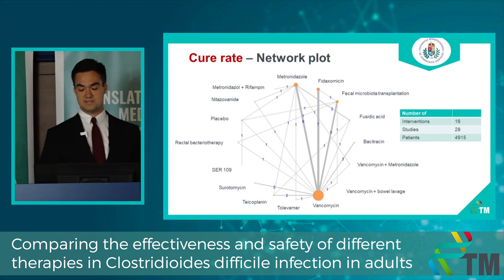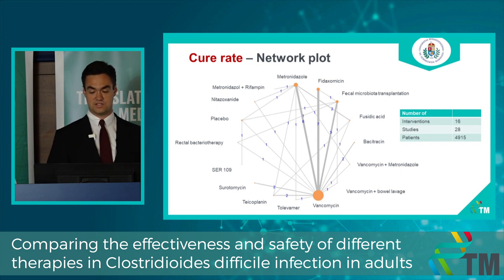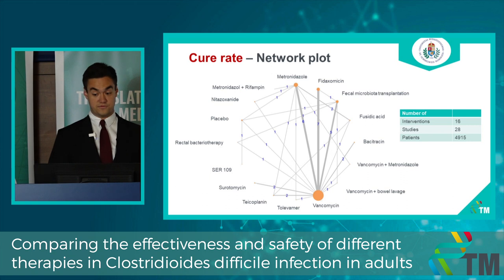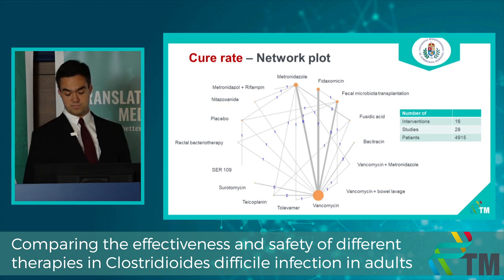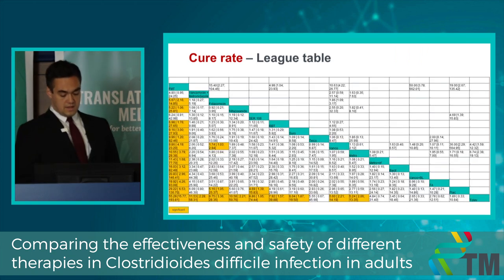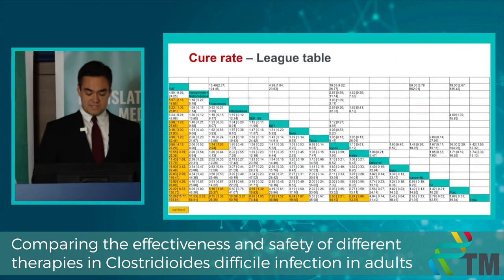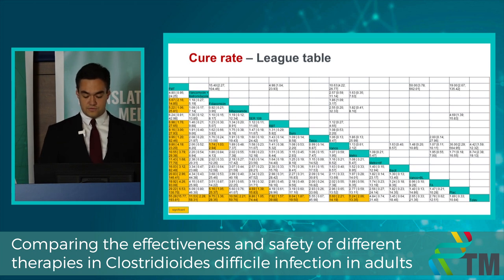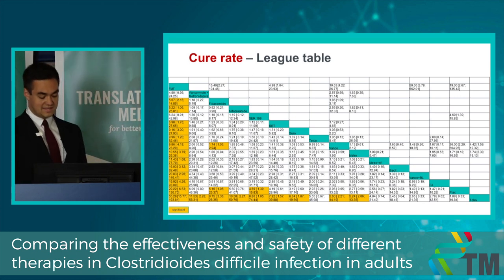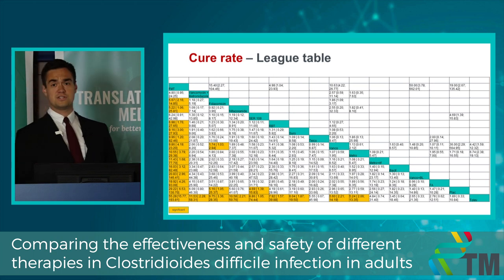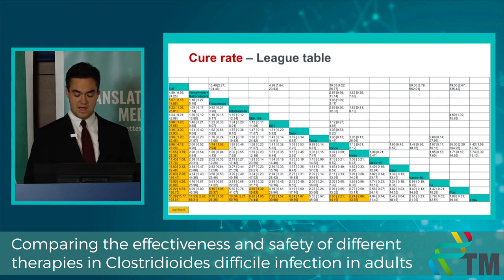For this analysis, we included 16 interventions from 28 studies and a little less than 5,000 patients. Related to this network, we investigated the cure rate of different kinds of therapies against C. diff infection. As a clinician, it's a really important outcome how effective our therapy is.